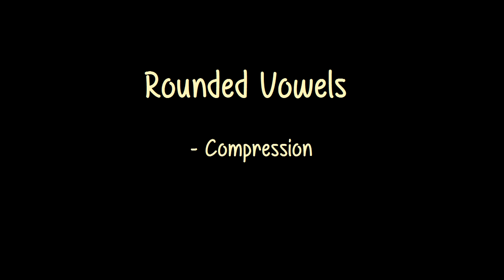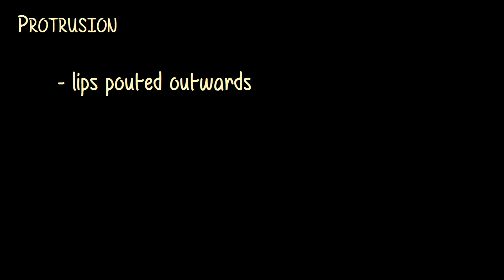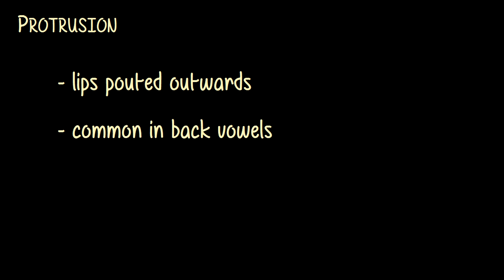The thing about rounded vowels that's crucial for learning Swedish is this: you can round a vowel in two ways. To use the technical terms, you can round a vowel by compression or by protrusion. Protrusion is when you round your lips by pouting them, as if you were trying to kiss someone. This is usually the normal type of rounding for back vowels. The English words 'cute,' 'boat,' and 'school' are all pronounced with protruded rounding. Say them aloud and notice how the lips start to pout when you get to the vowel. If you exaggerate, the protruded rounding is even more noticeable.